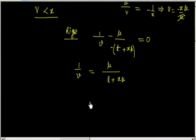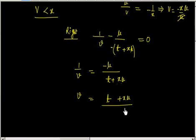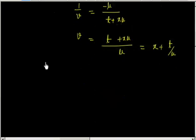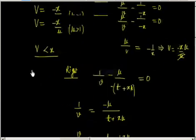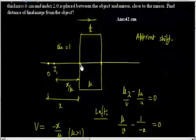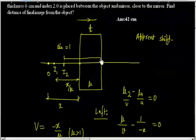Solving for V: since the sign is negative, V equals T plus x·mu divided by mu, which simplifies to x plus T/mu. So the second image V2 is formed at a distance of x plus T/mu from the second surface.